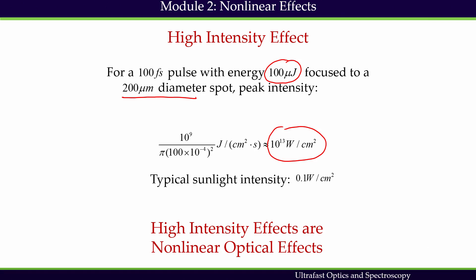We can compare this peak intensity with typical sunlight intensity, which is 0.1 watt per centimeter squared. This shows that femtosecond laser pulses are 10^14 times more intense than sunlight. Due to this extremely high peak intensity, ultrafast pulses exhibit high intensity effects, which are called non-linear optical effects.